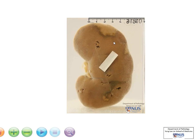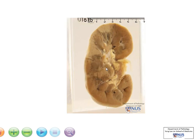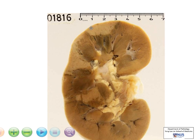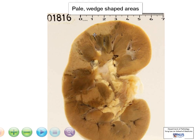And when we turn this around, we can see the capsular surface. There are some areas of abnormality. These are focal areas, and what we can see are that they are pale, wedge-shaped areas of discoloration, with the broad edge of the wedge abutting against the renal capsule.